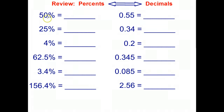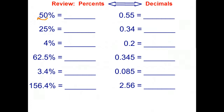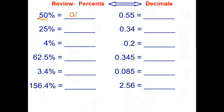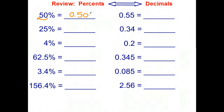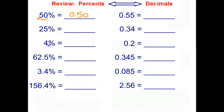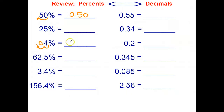To turn a percent to a decimal you just divide by a hundred, and the effect of dividing by a hundred is to move the decimal point back two places. So 50 percent written as a decimal is 0.5, or if you prefer 0.50. If you're turning 4 percent to a decimal, you've got to move your decimal point back two places, and therefore we need a zero to hold the place — that becomes 0.04.